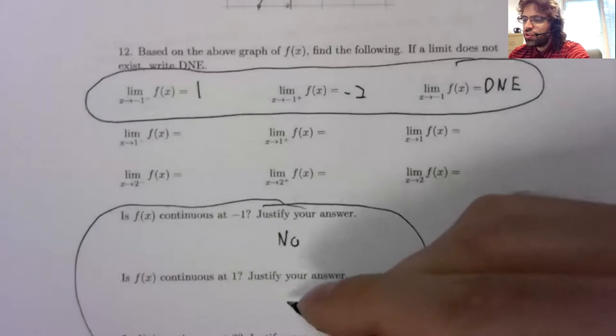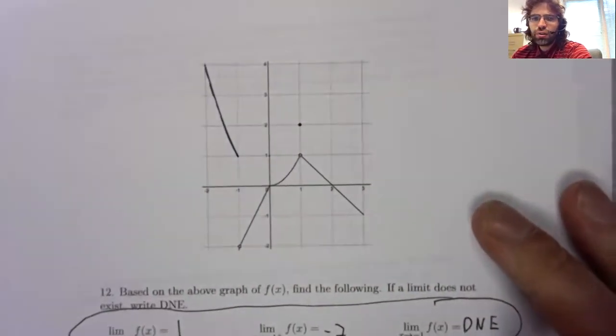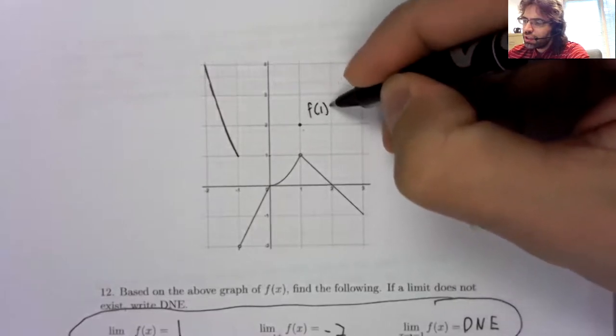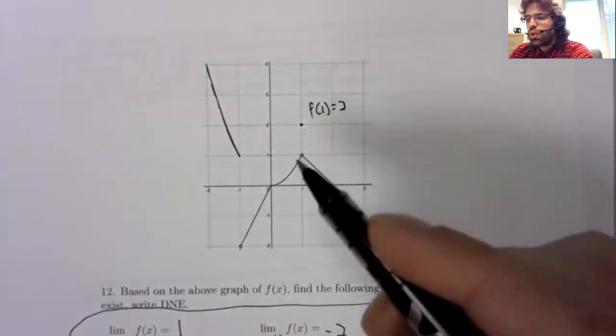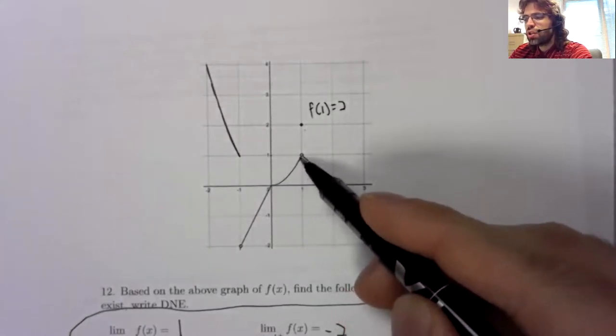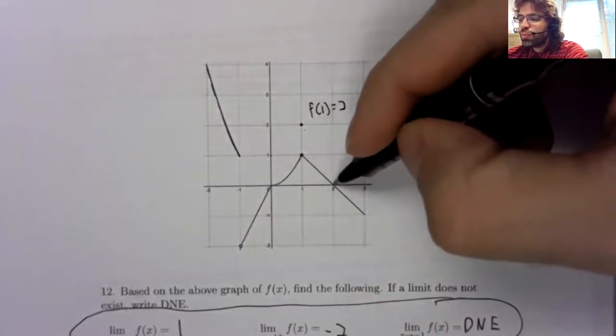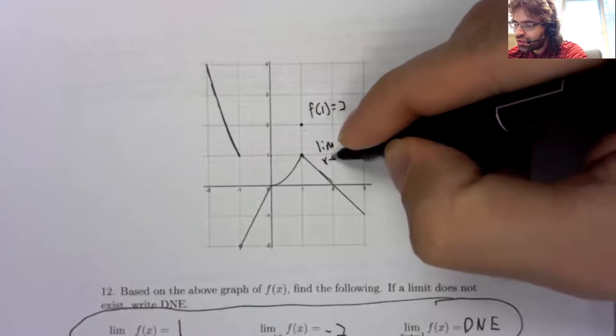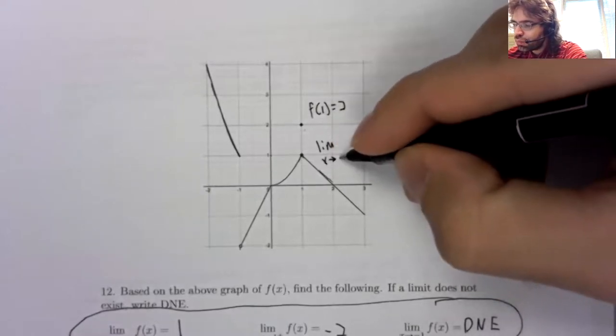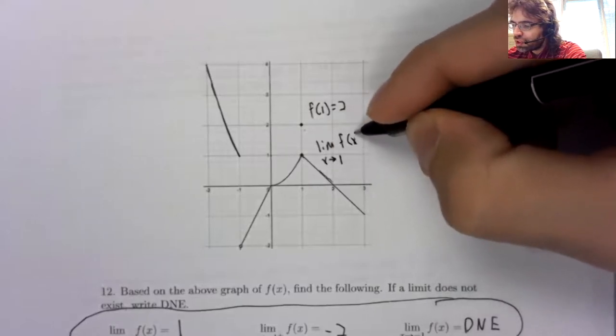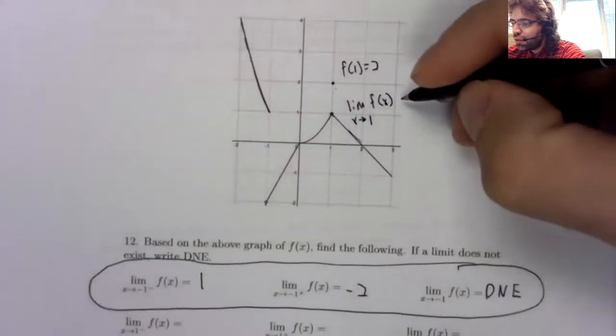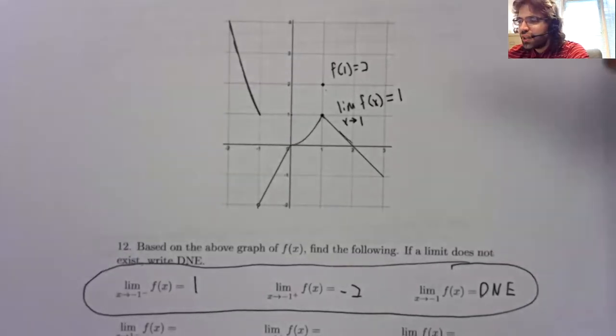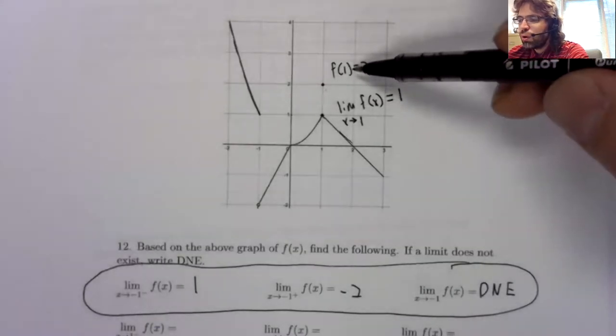It's not continuous at one either. Because f, yes, f of one is two. But when we approach one from the left, y is going up to one. And when we approach one from the right, y is going up to one. So I guess I said we were skipping problems, but we more or less ended up doing these after all. When we approach one from the left and from the right, the limit is one. And this limit does not equal f of one.